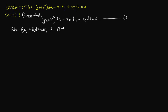So p equals yz plus z squared, q equals minus xz, and r equals xy.